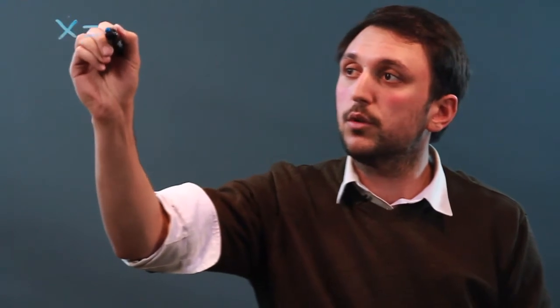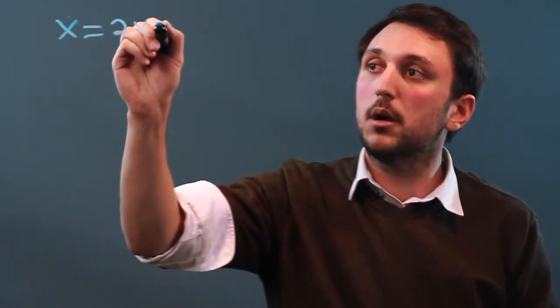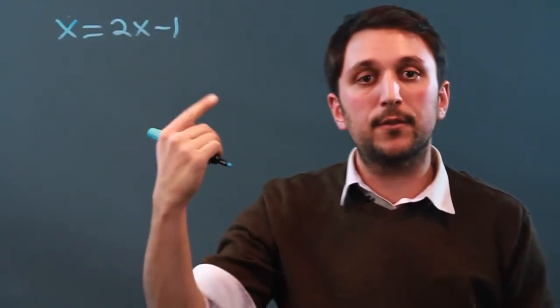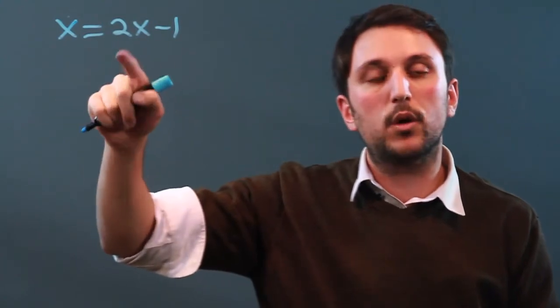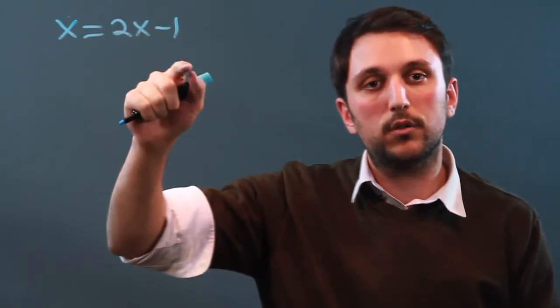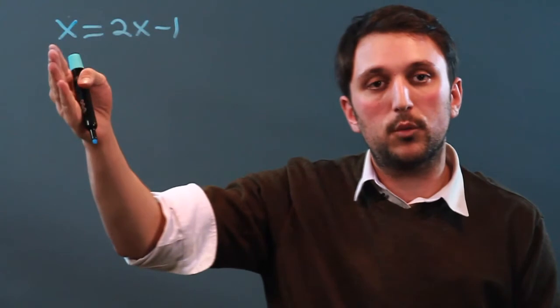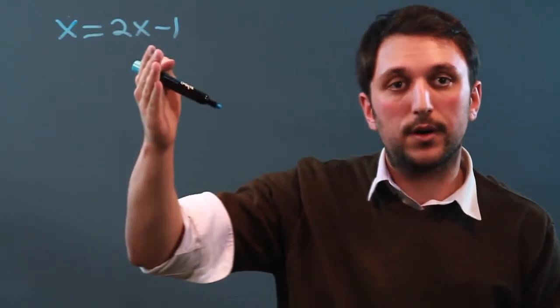So let's start with a simple one. Let's do x equals 2x minus 1. And the first thing you have to think about is you always want to have 0 on one side, or at least a number on one side, and all your variables on the other.